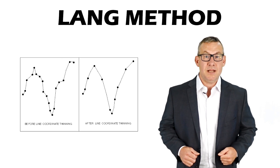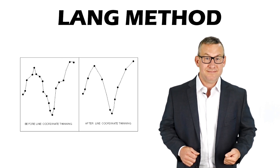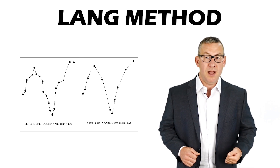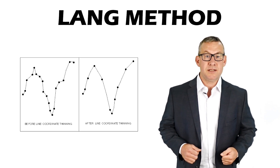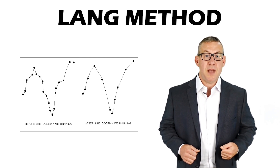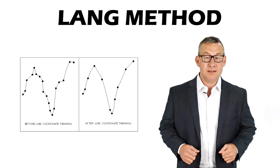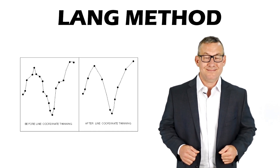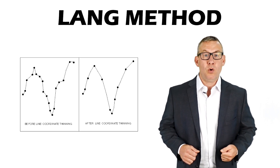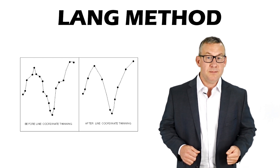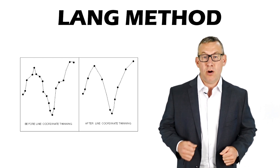The Lang method is a point thinning technique. It uses a spanning line that connects two non-adjacent vertices in a line. The thickness of the spanning line is the weed distance. Any points that fall within the weed distance of the line are removed. This process removes more points on lines that are not complex or straight than lines that are complex or have many changes in direction.